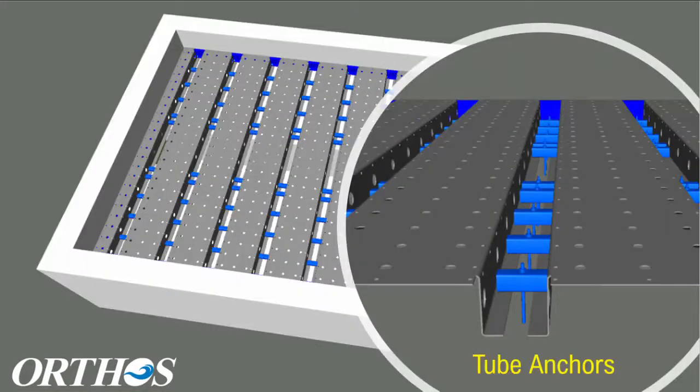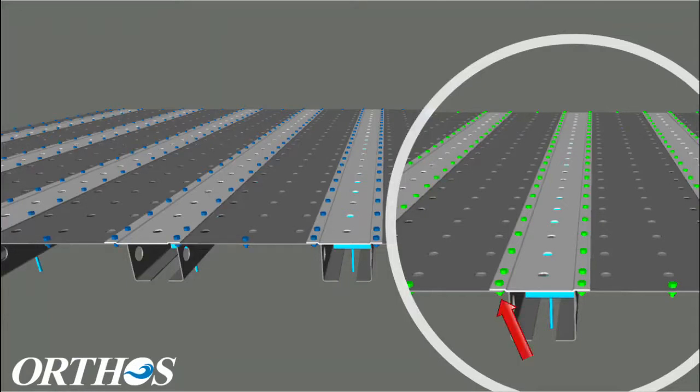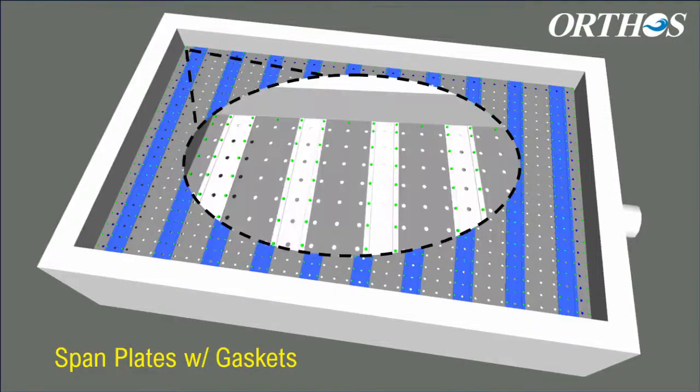Nozzle plates are secured to the filter floor using square anchor tubes with epoxied anchors. Span plates with gaskets are bolted through the nozzle plates and into nuts that are factory welded to the underside of the nozzle plate. Nozzle plates and span plates extend over the perimeter frame and are connected with bolts and gaskets to further seal up the top of Maximus.